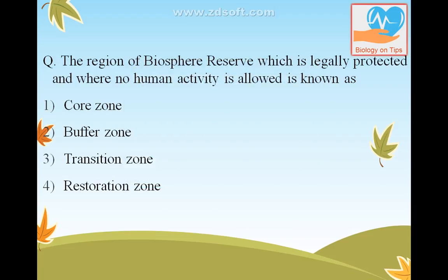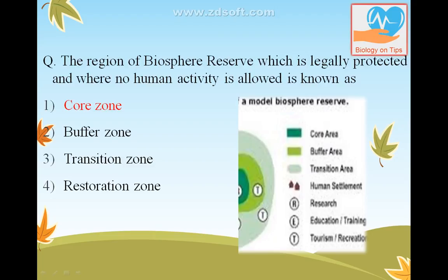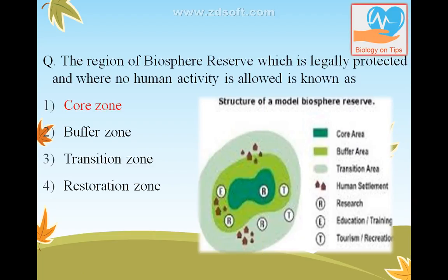The region of a biosphere reserve which is legally protected and where no human activity is allowed is known as the core zone. The three zones are: core zone — no human interference; buffer zone — limited human activity; and transition zone — where human settlement, grazing, and cultivation are allowed.